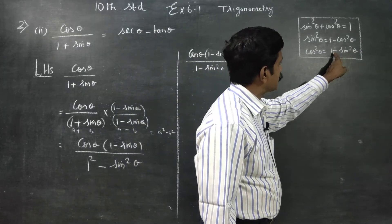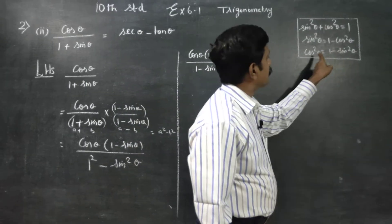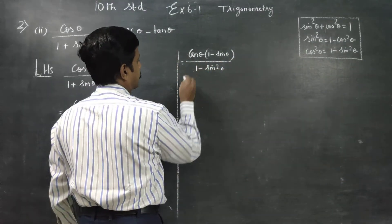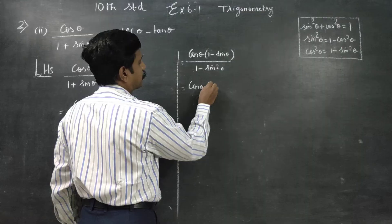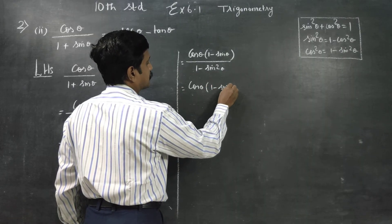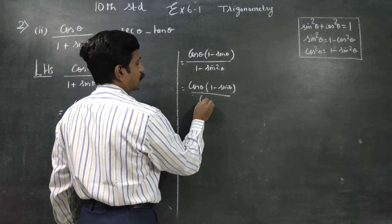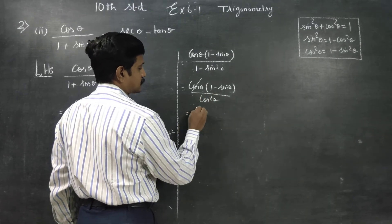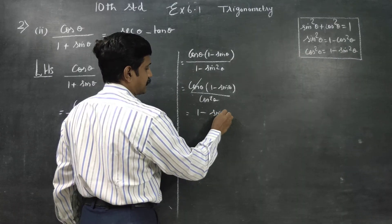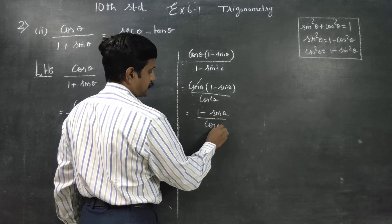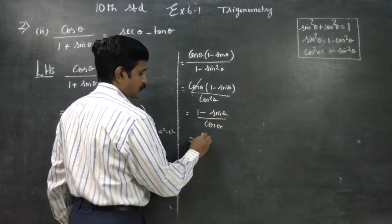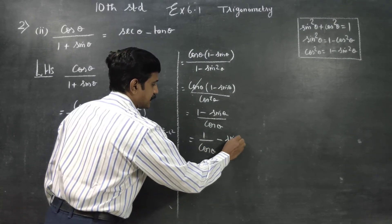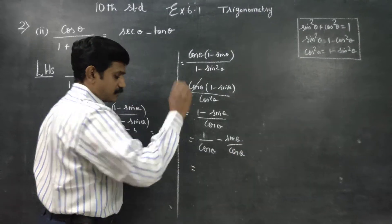So 1 - sin² θ becomes cos² θ. We now have cos θ times (1 - sin θ) all divided by cos² θ. The cos cancels, leaving (1 - sin θ) divided by cos θ. This splits into 1/cos θ minus sin θ/cos θ.